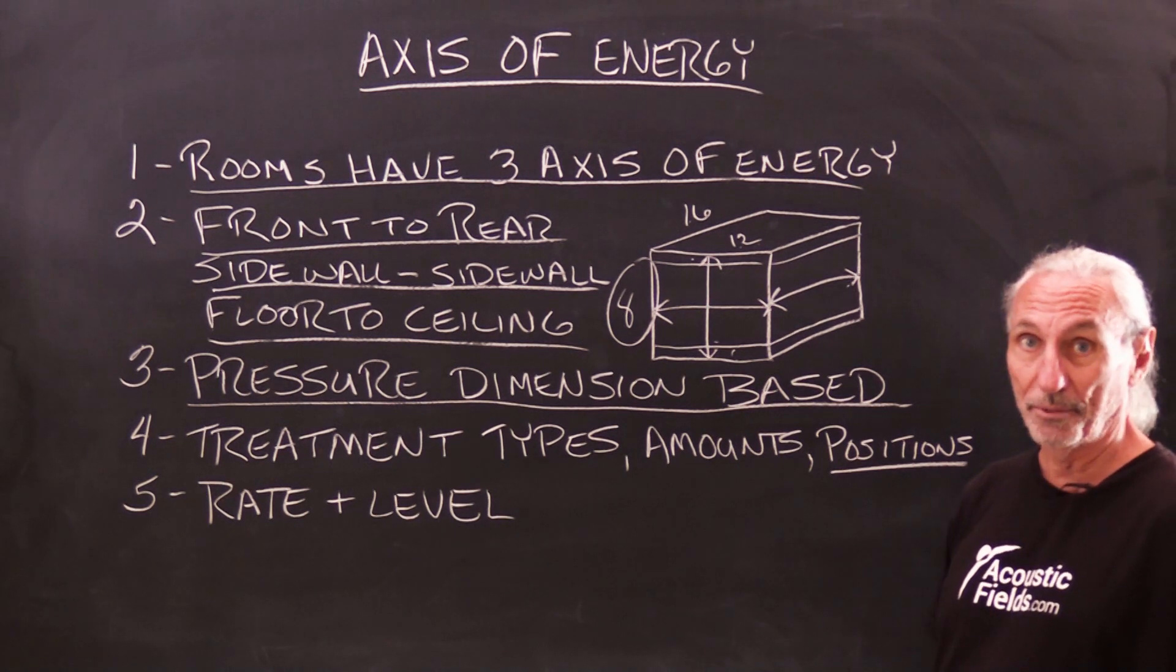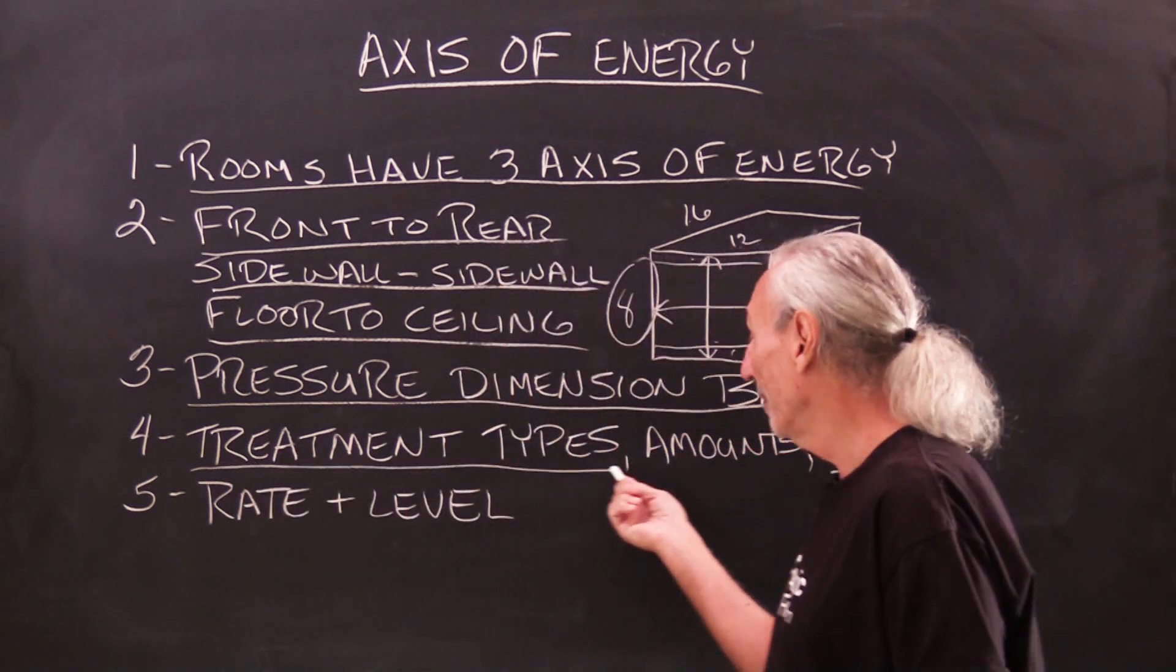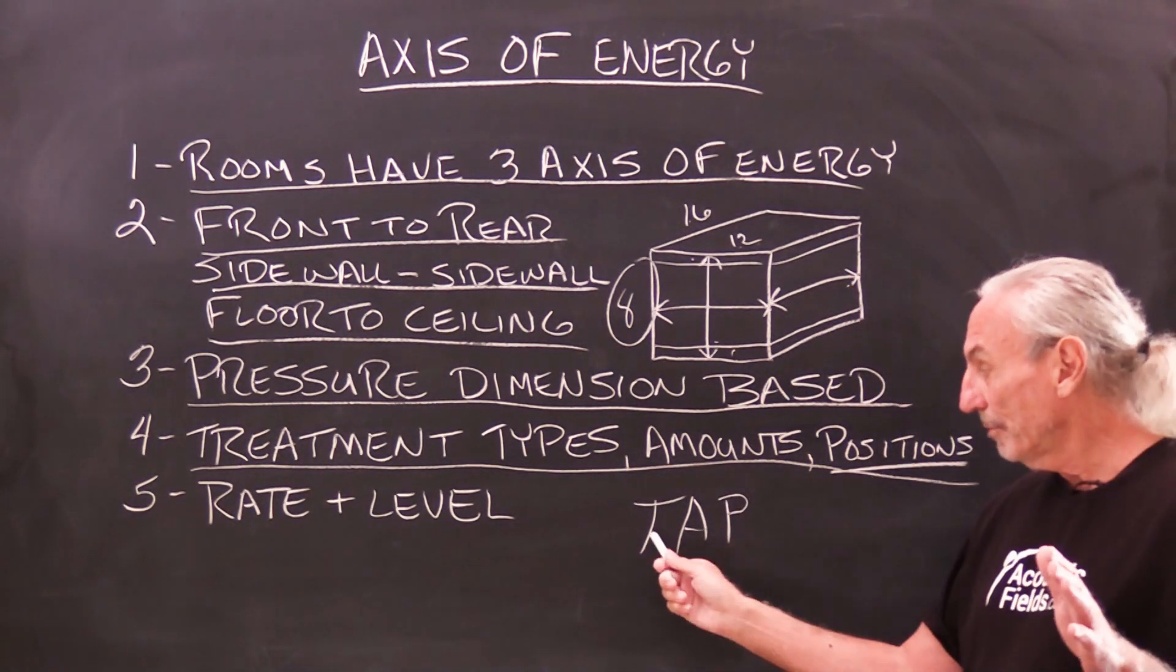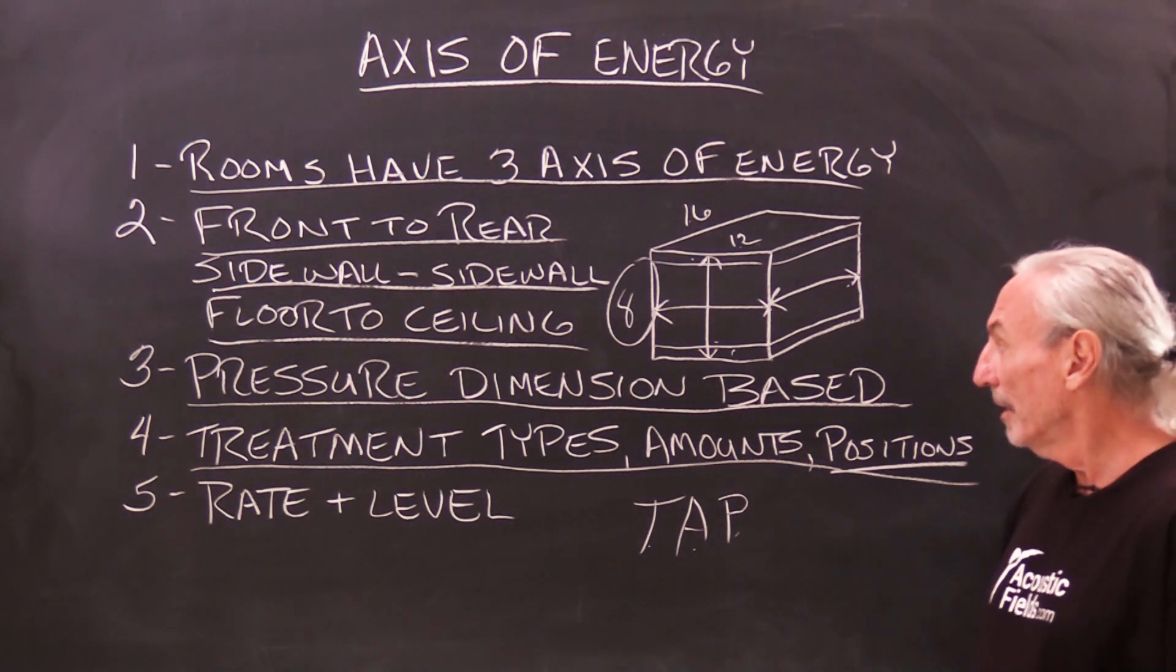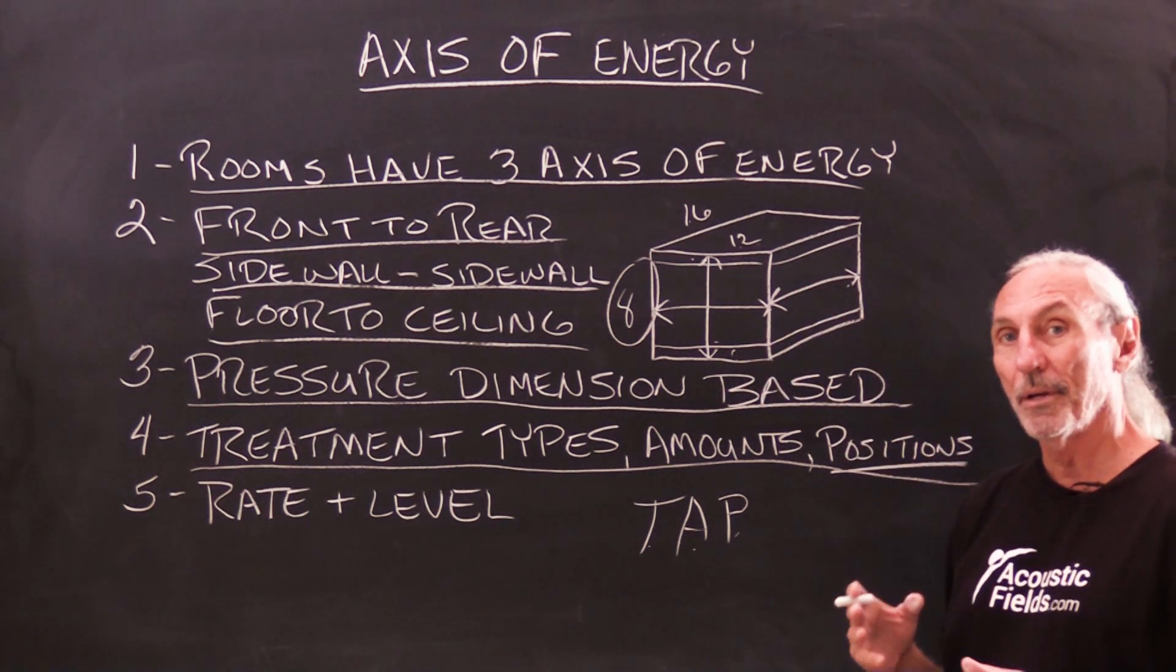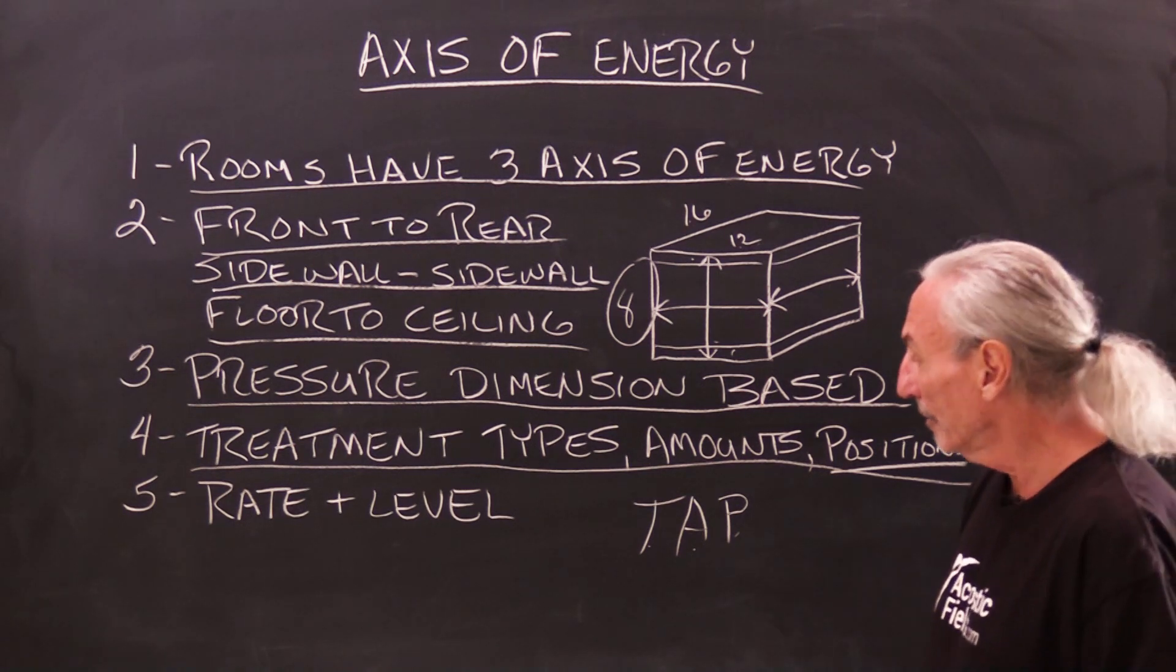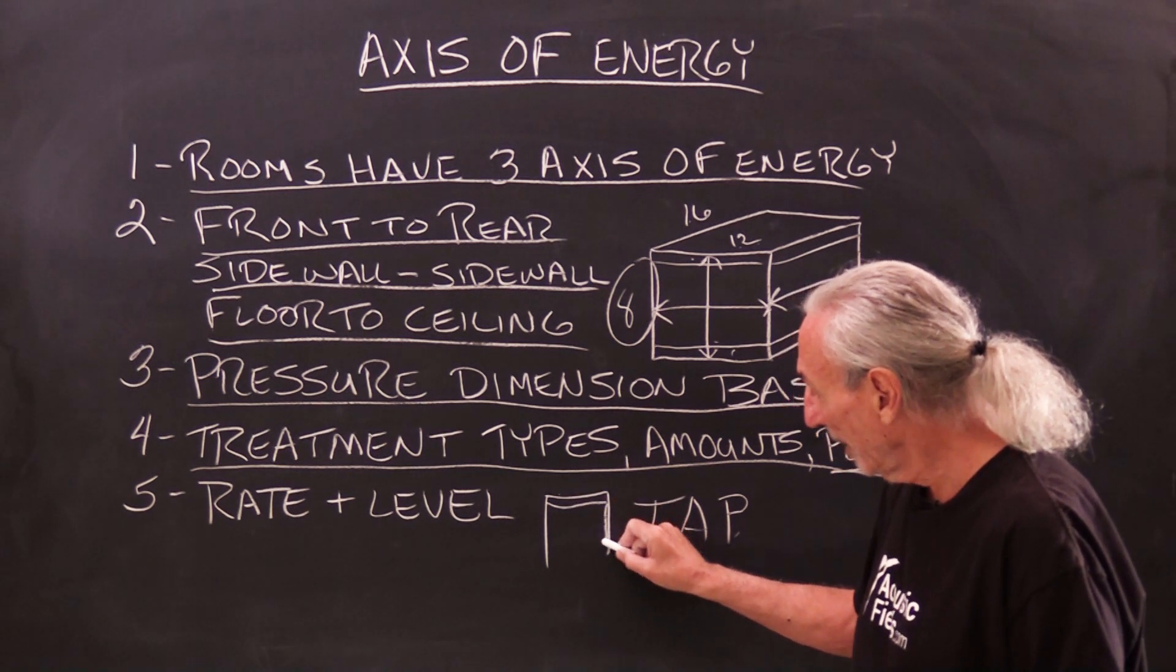When we're looking at treatments, remember TAP, the acronym that we work with: type, amount, and position. You've got to have the proper treatment, the proper amount, and you've got to put it in the right place. We've discussed floor to ceiling, side wall to side wall, and front wall are the three surface areas that we treat in most rooms that are mixed or two channel rooms. We've got to have that consistency in treatment of the front wall and both side walls.